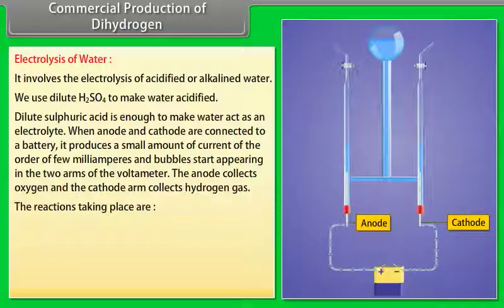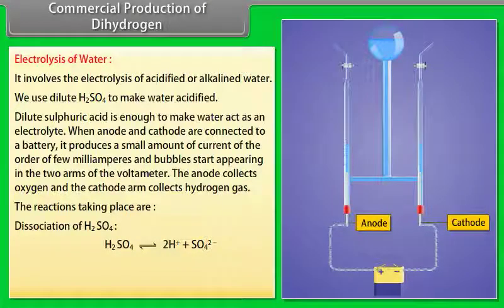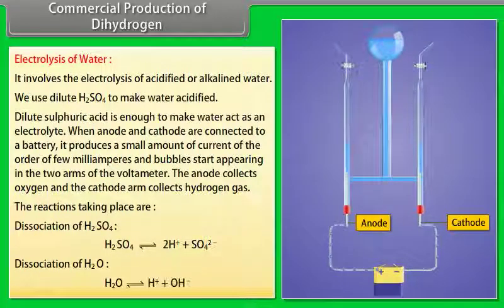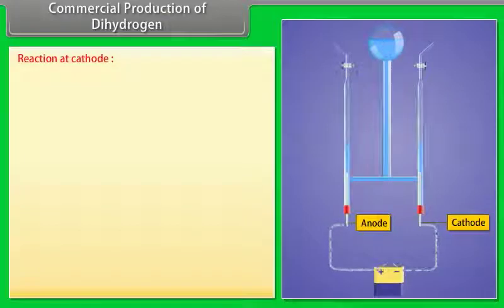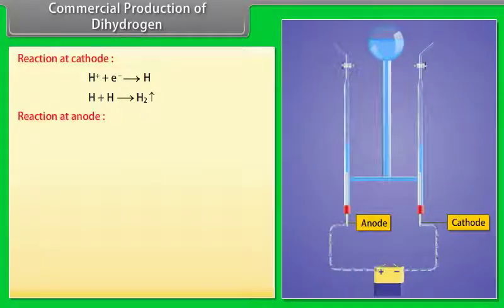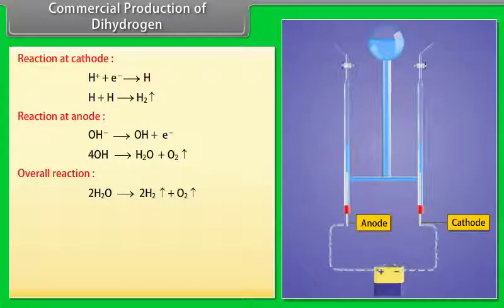The reactions taking place are: Dissociation of H2SO4: H2SO4 gives 2H+ plus SO4 2-. Dissociation of H2O: H2O gives H+ plus OH-. Reaction at cathode: H+ plus electron gives H; H plus H gives H2. Reaction at anode: OH- gives OH plus electron; 4OH gives H2O plus O2. Overall reaction: 2H2O gives 2H2 plus O2.